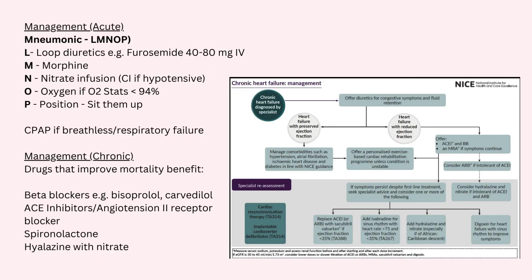To remember the management of acute heart failure, we manage it differently based on whether it's acute or chronic. For acute, use the mnemonic LMNOP: L standing for loop diuretics, M for morphine, N for nitrate infusion, O for oxygen if the sats are less than 94%, and P for positioning — sitting them up.